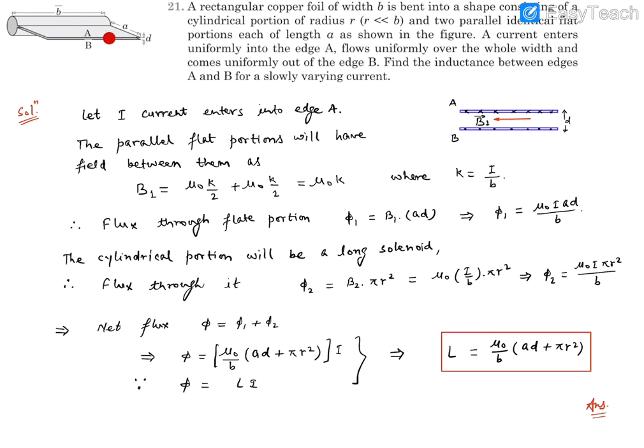The cylindrical portion is going to behave like a long solenoid because r is very small and b is very large. So the flux φ₂ equals B₂, the field inside the solenoid, times the area which is πr².